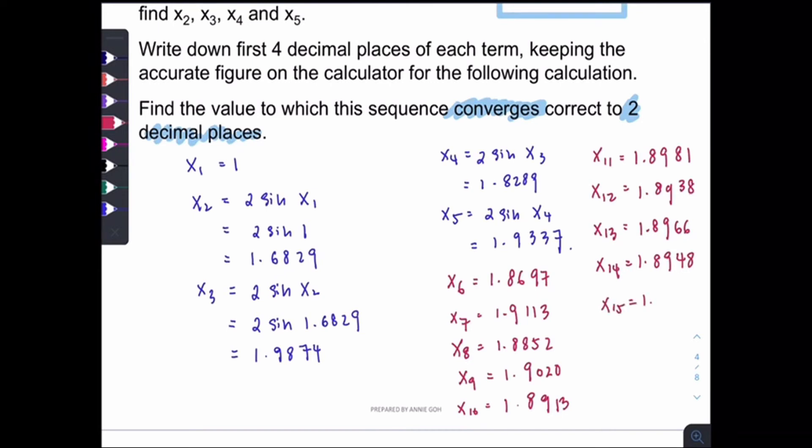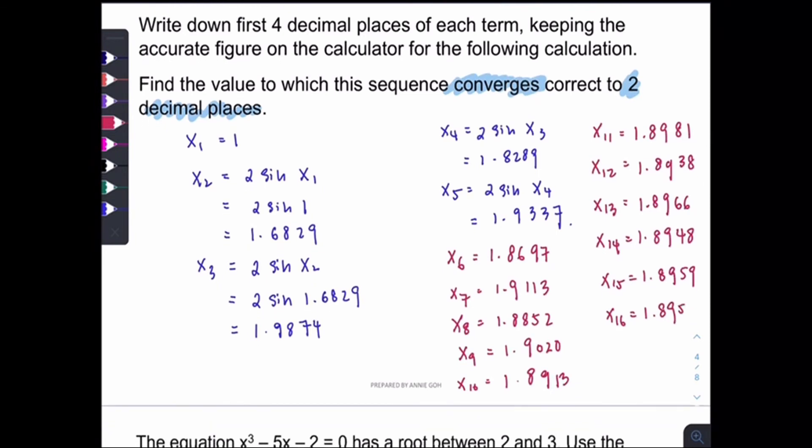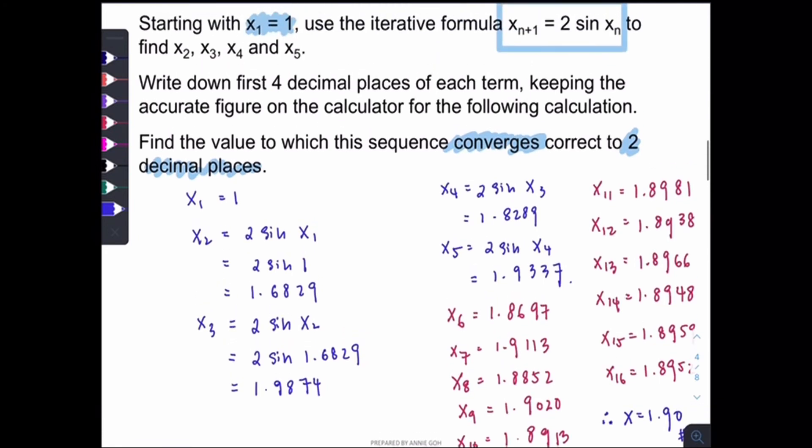x15 is 1.8959. x16 is 1.8952. So now, have you noticed something? Here, when you round up it's 1.90, 1.89, 1.90, 1.89, 1.90 and 1.90. So it's repeated. So once the answer is repeated, then we can stop pressing the calculator and conclude that the final answer is actually 1.90. This is the solution of the equation x equals 2 sine x by using the iteration method.